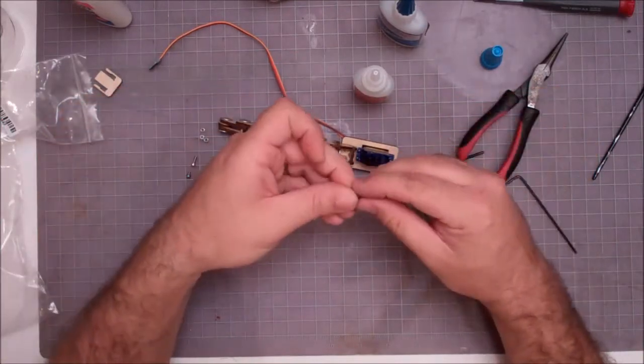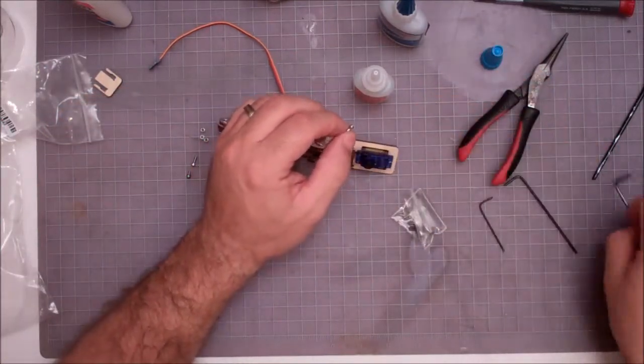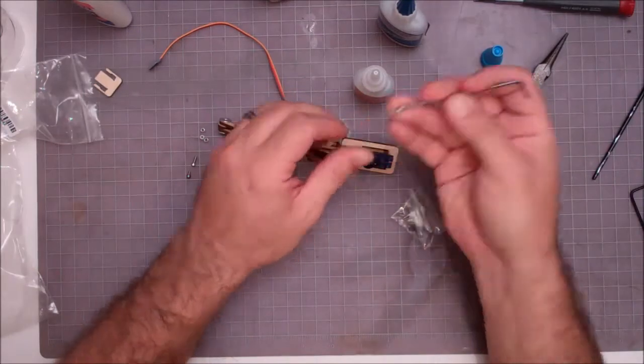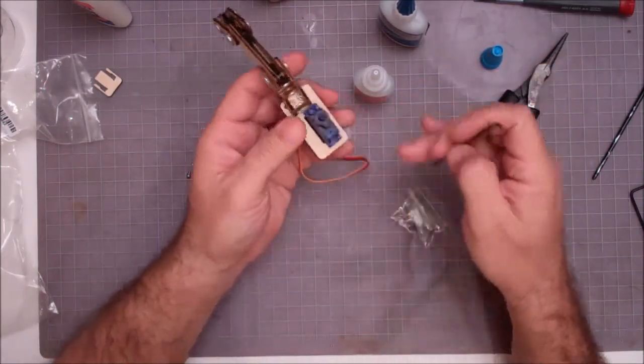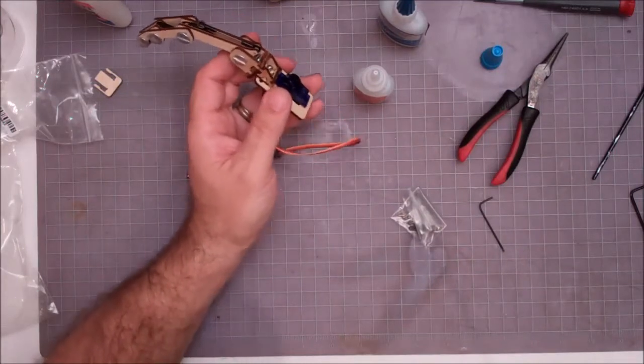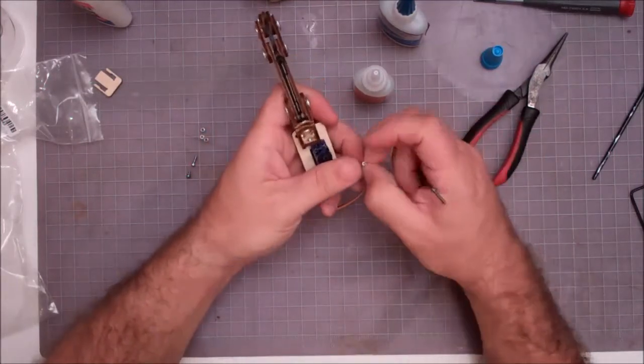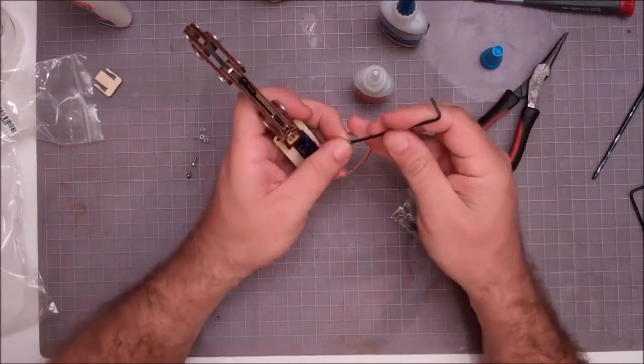Now this is where the 256 screws come in. So we'll grab our next size down Allen wrench. I place the 256 screw on there. Now the holes in the servo are a little tight for these screws. So you basically just need to screw it through the plastic in the servo.